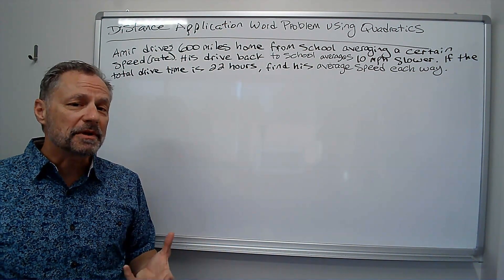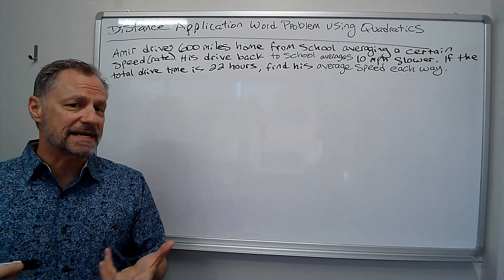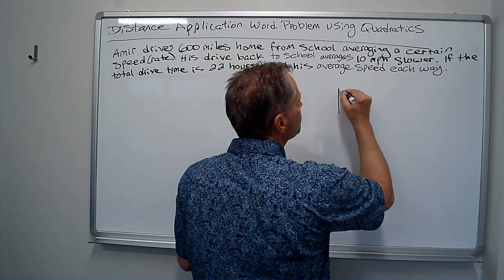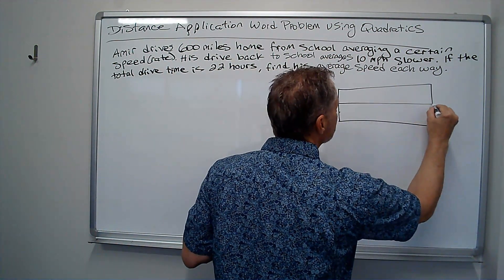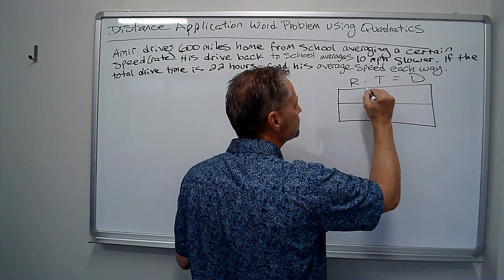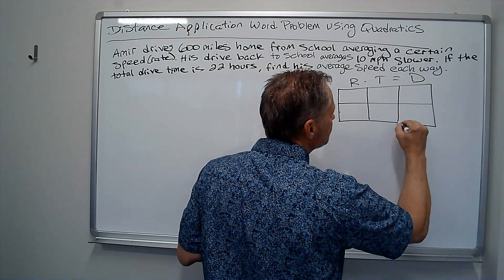The key formula for a distance problem like this is rate times time equals distance. So I'm going to set up a box over here. We'll set up this box something like this. We'll go rate times time equals distance, and we'll make the box fairly big.